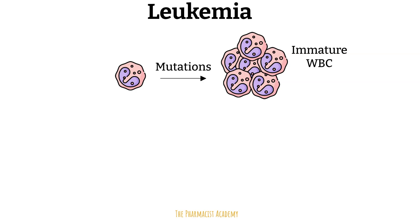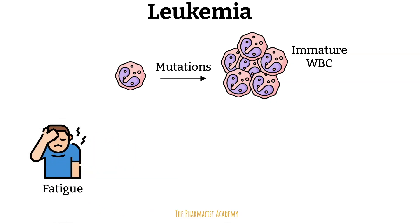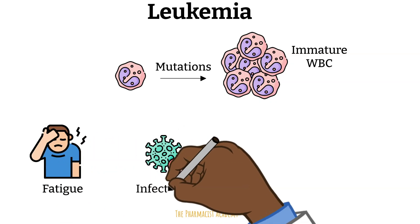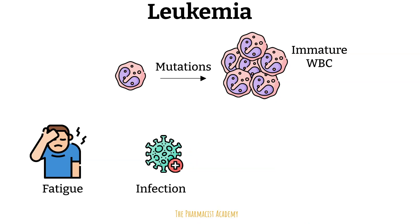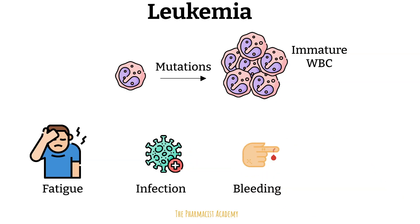Leukemia causes the bone marrow to produce large numbers of abnormal white blood cells that don't function properly and crowd out normal blood cells. This leads to decreased red blood cells causing anemia presenting as fatigue, infections due to decreased white blood cells, bleeding due to decreased platelets, and bone pain because the cancer activity in the bone marrow puts it into overdrive.